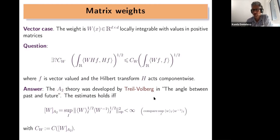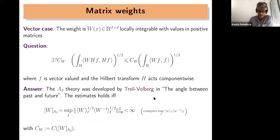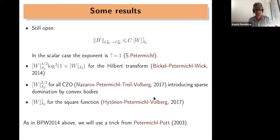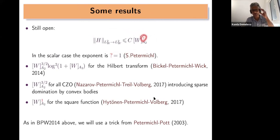One can compare the quantity involving the operator norm — whatever operator norm we choose for those matrices — to the scalar case, where the exponents are differently distributed. It reduces to the scalar case when W is a scalar. It is quite striking that for the vector case with matrix weights, the optimal bound of the boundedness of the Hilbert transform in those weighted spaces is not known. In particular it is not known if it is linear in the A2 characteristic, whereas we know that for the scalar case this is a linear exponent — a result from Stefanie Petermichel.